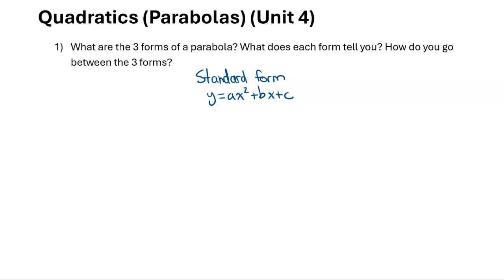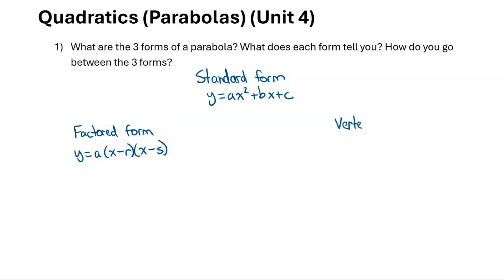Standard form has no brackets — it's fully expanded and simplified. Another form is factored form, which is factored: two sets of brackets, y equals a times x minus r times x minus s. The final form is vertex form: y equals a times x minus h all squared plus k, where h and k is the vertex — that's why it's called the vertex form.